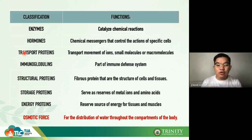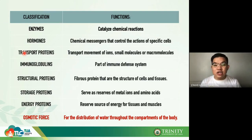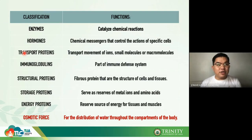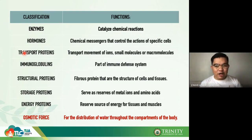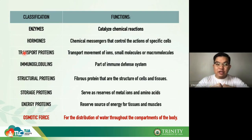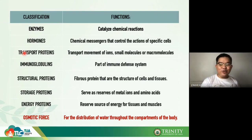Moving forward, let's now go to the different types of conjugated proteins. Simple proteins are plain proteins with no metals, carbohydrates, or lipids attached. Conjugated proteins, by definition, involve a combination of two compounds — a protein combined with another molecule, which we will discuss shortly.